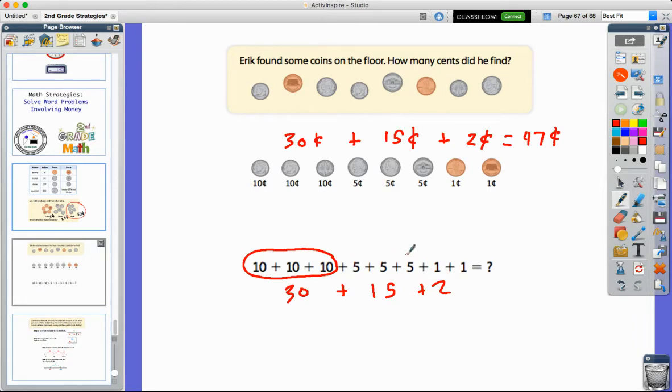I can do 10, 20, 30, I can count on 35, 40, 45, 46, 47. Either way we end up with 47 cents.